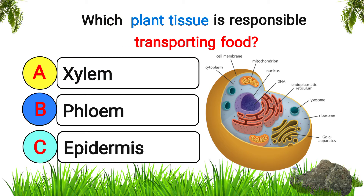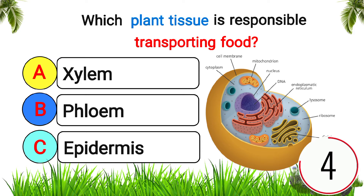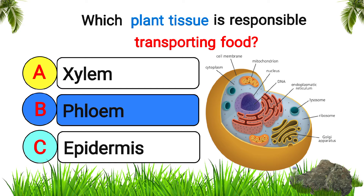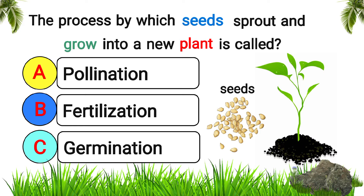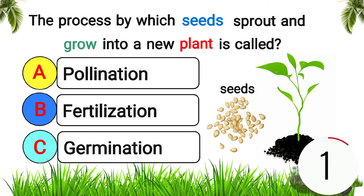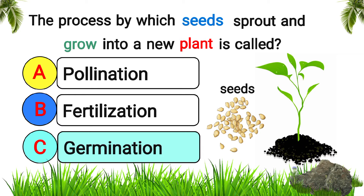Which plant tissue is responsible for transporting food? Answer: phloem. The process by which seeds sprout and grow into a new plant is called? Answer: germination.